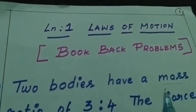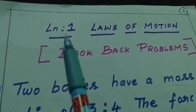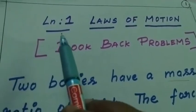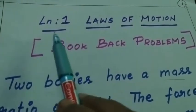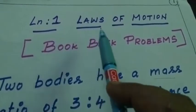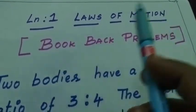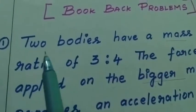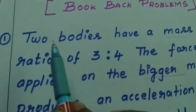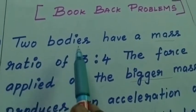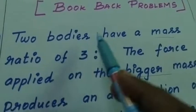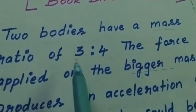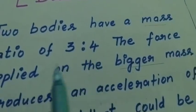Good morning students. In our today's online class we are going to solve lesson number one, Laws of Motion, back problems. Our first question: when two bodies have a mass ratio of three is to four,